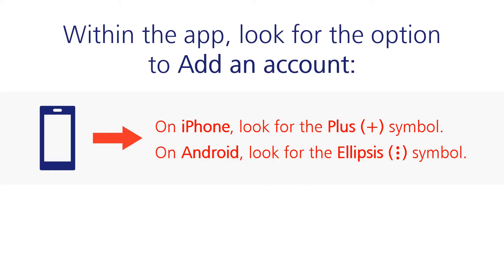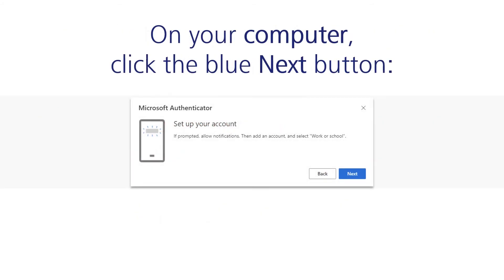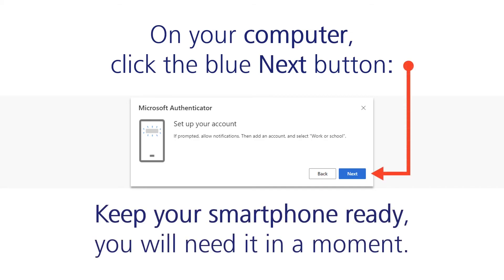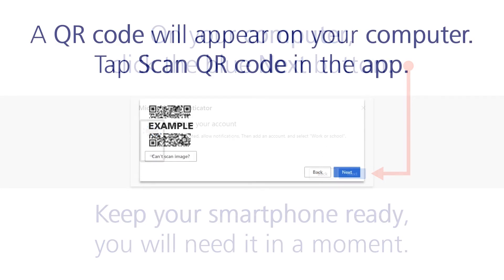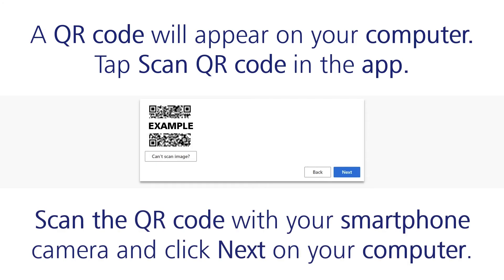On Android, look for the ellipsis symbol. Choose the option for work or school account. On your computer, click the blue Next button. Keep your smartphone ready — you'll need it in a moment. A QR code will appear on your computer. Tap 'Scan QR code' in the app, then scan the QR code with your smartphone camera and click Next on your computer.